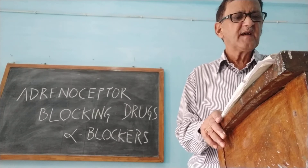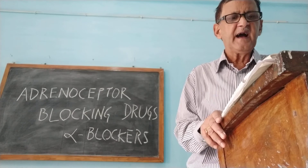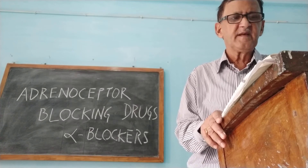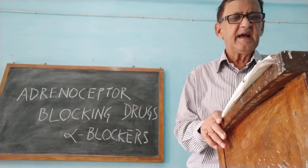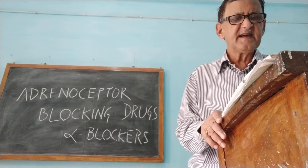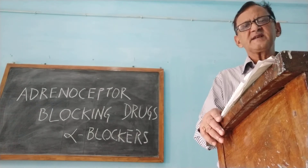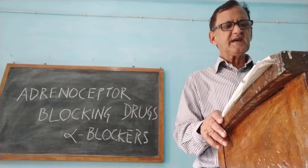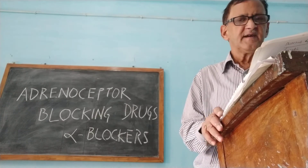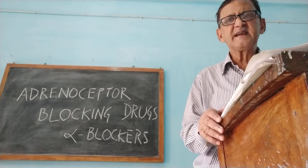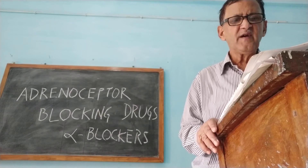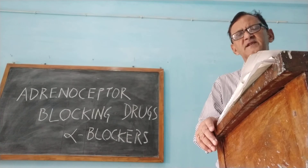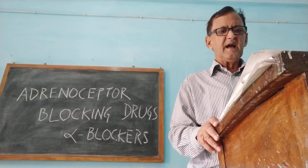The next drug in this group is terazosin. It blocks alpha-1A, alpha-1B, and alpha-1D receptors. Its bioavailability is greater, plasma half-life is 12 hours, and the dose is 2 to 10 mg once daily. It is used in benign prostatic hyperplasia. Next is doxazosin, the longest-acting selective alpha-1 blocker. It has similar effects to prazosin and is used in treatment of benign prostatic hypertrophy and hypertension.